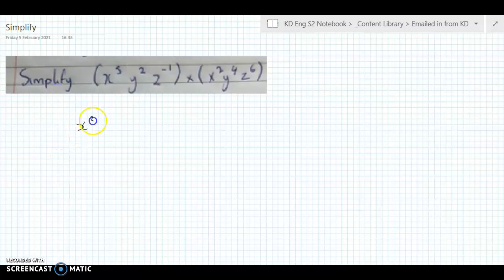Simplify x cubed multiplied by y squared times z to the power minus 1, that's in one bracket, multiplied by x squared times y to the power of 4 times z to the power of 6.